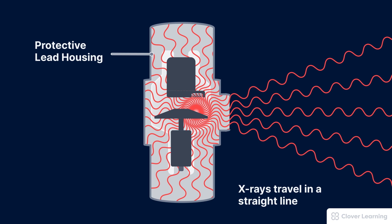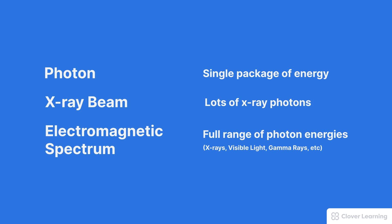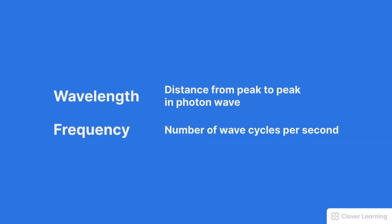In summary, here's some of the terms that we discussed. A photon refers to a single package of energy. An x-ray beam is made of x-ray photons. We also talked about the electromagnetic spectrum. This refers to the full range of photon energies. The electromagnetic spectrum includes x-rays, but also lower energy photons like visible light, and higher energy photons like gamma rays. Wavelength is a term that refers to the distance from one peak to the next in a photon wave. As wavelength decreases, the photon energy increases.